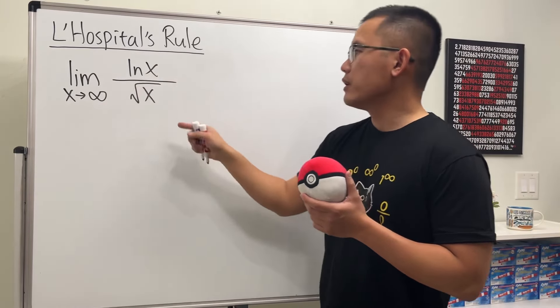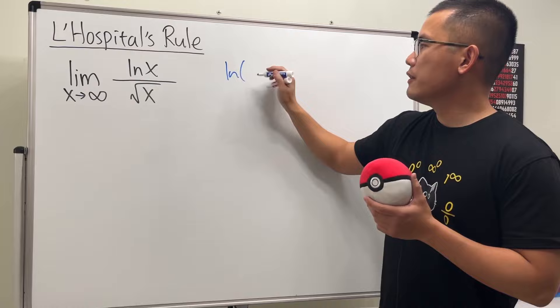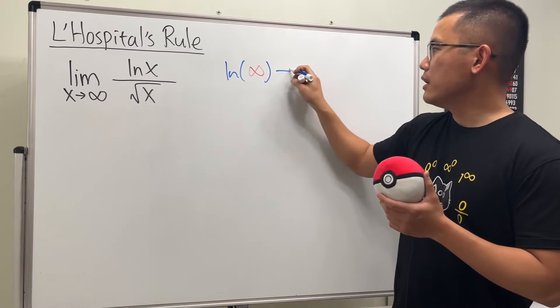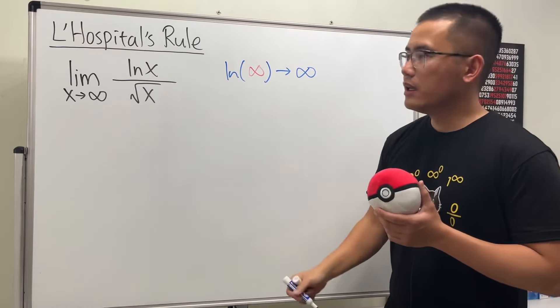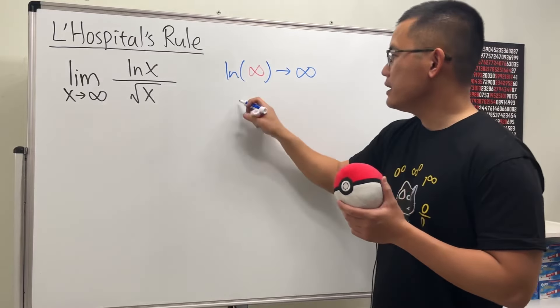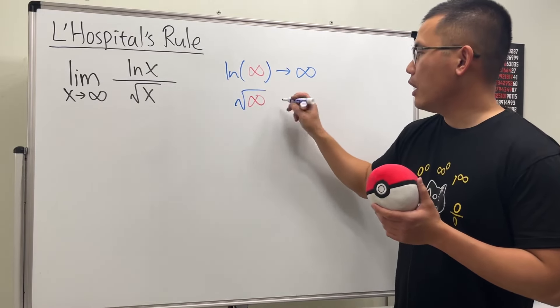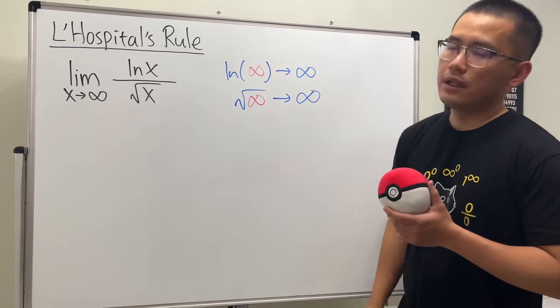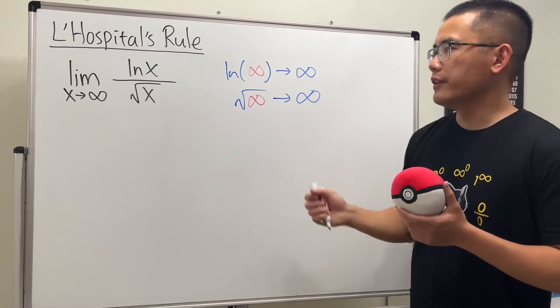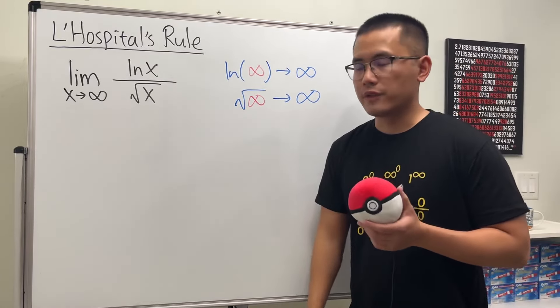First, when we put infinity here, we get ln of infinity, and this approaches infinity. And when we have square root of infinity, this also approaches infinity. One way to see this is you can look at the graph for ln(x) and also the graph for square root of x.